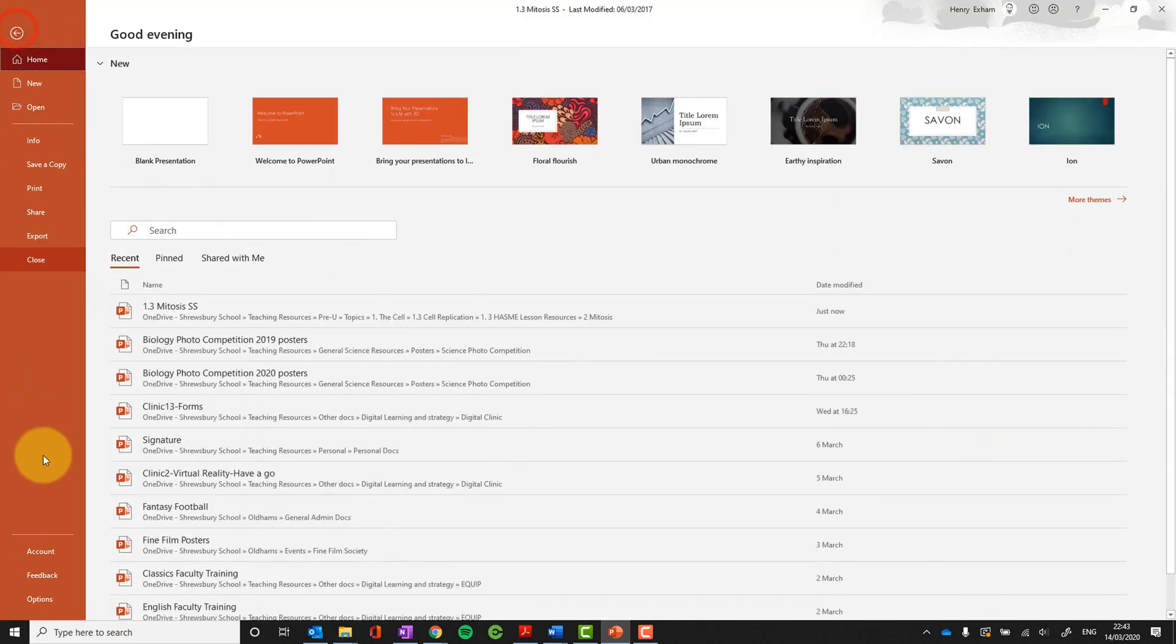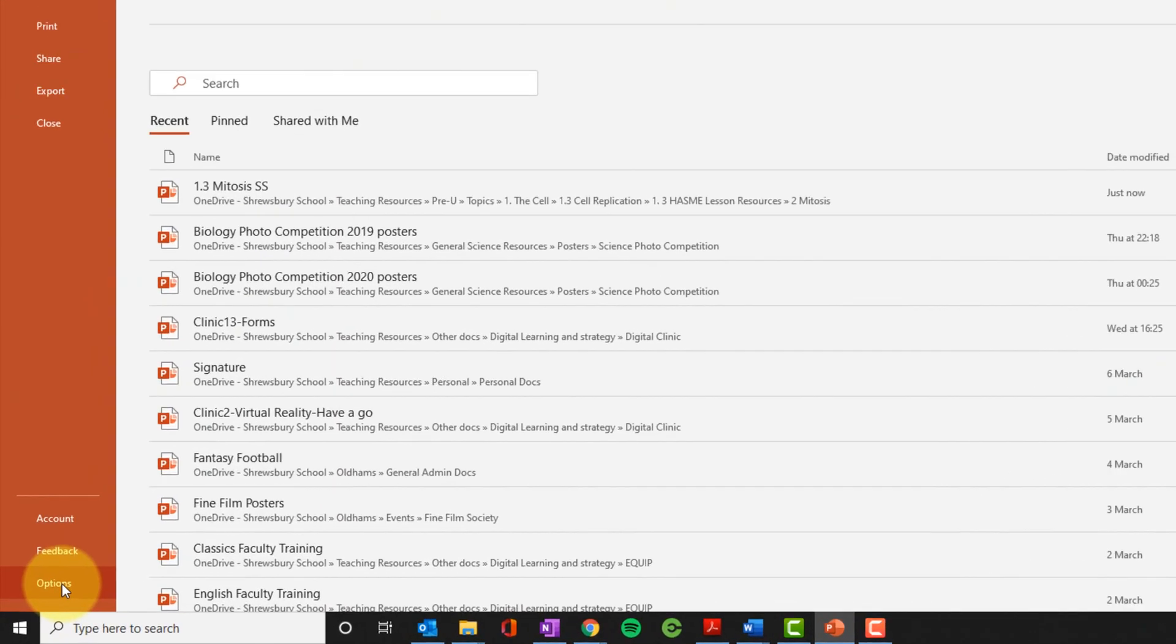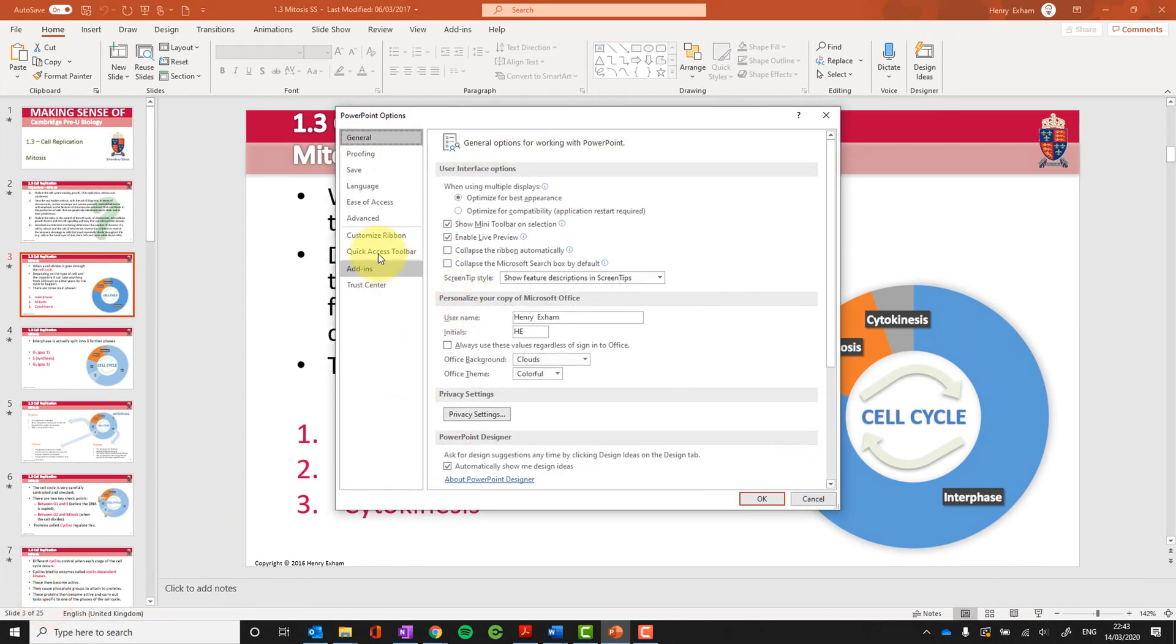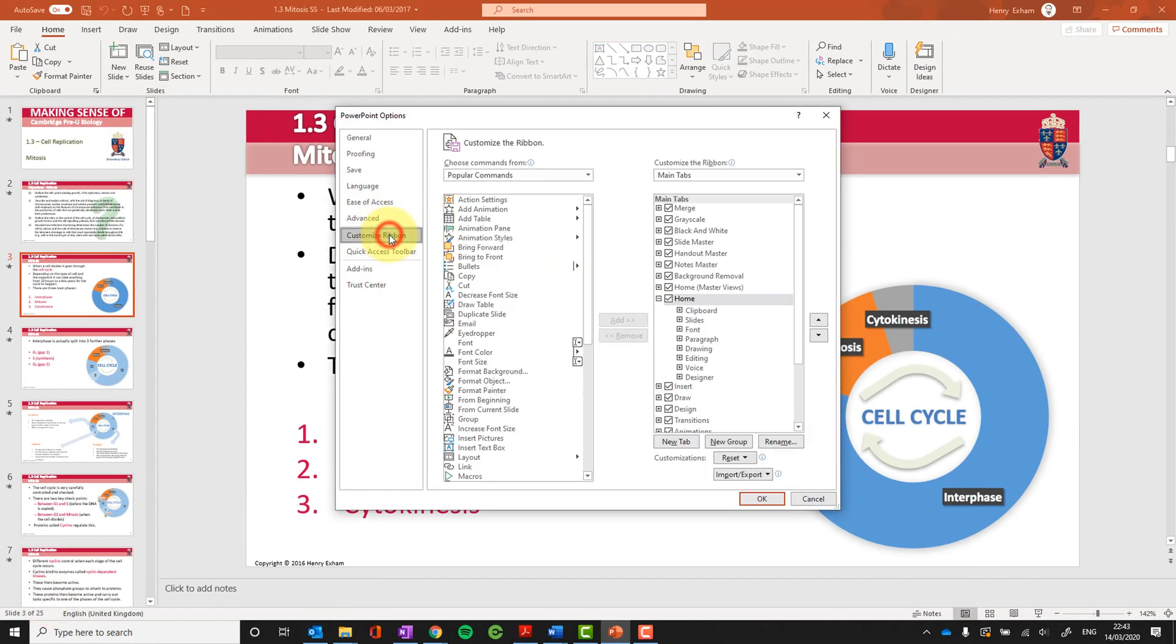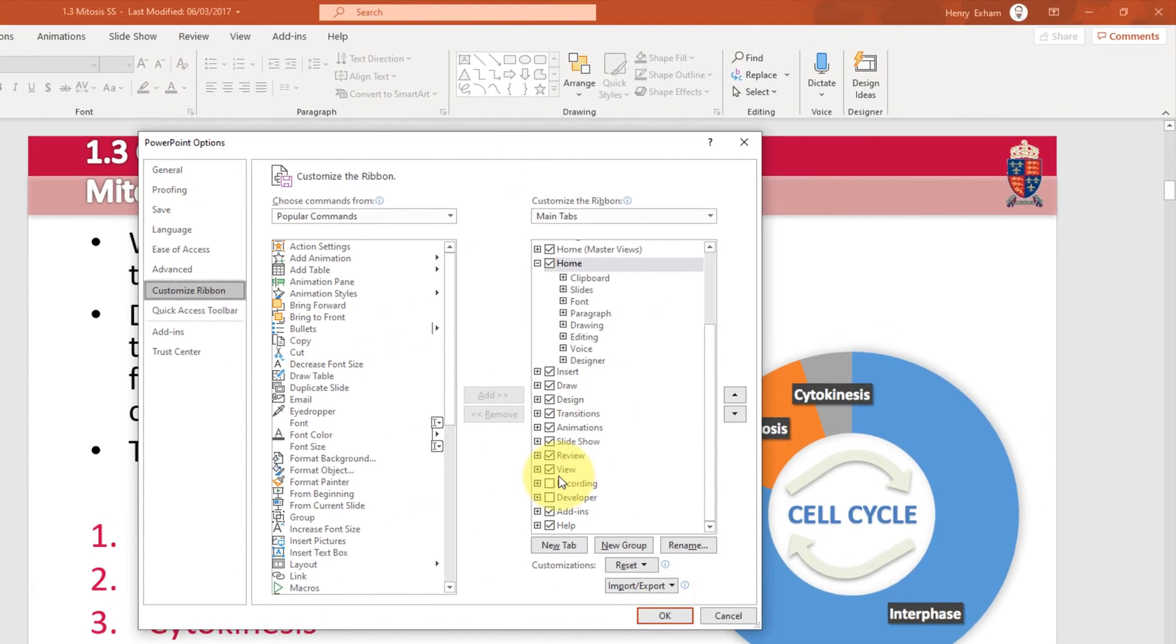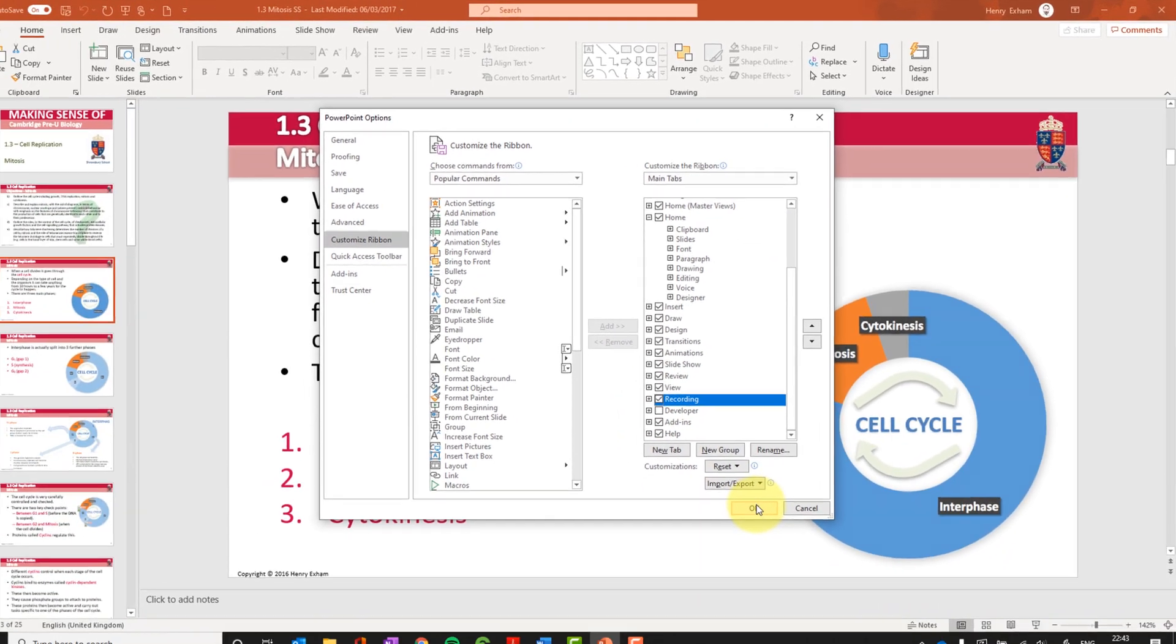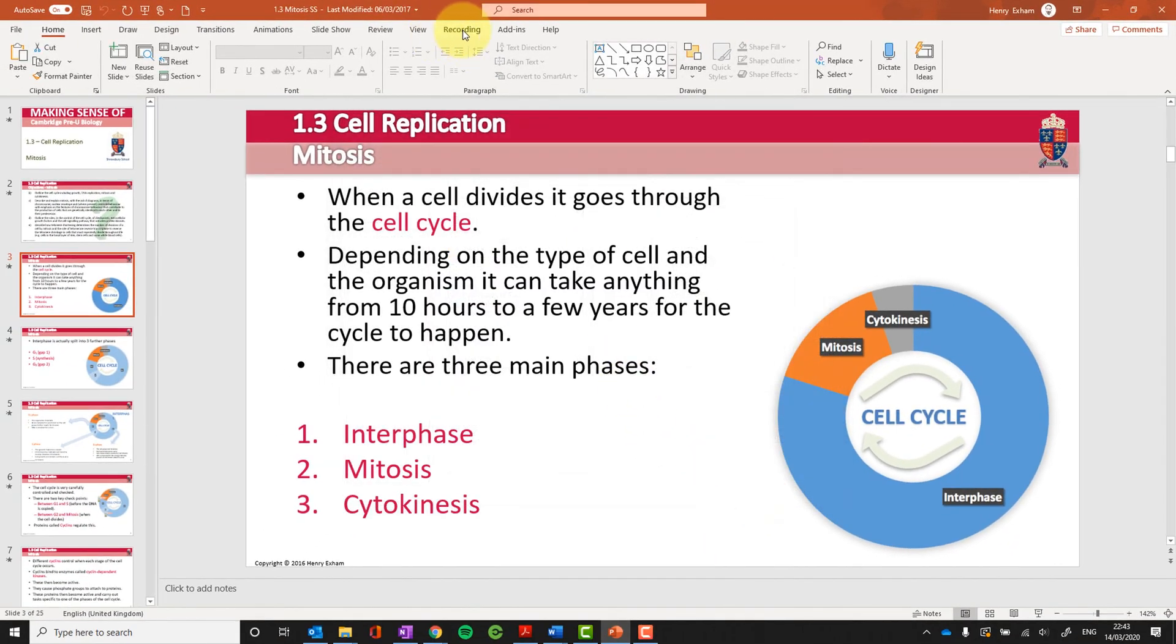You go to File, and you go down to the bottom left where it says Options. Then you need to go to the Ribbon, because that's what that thing across the top is called. Over here on the right hand side, just make sure that Recording box is ticked. I tick it. I will now get a new tab called Recording.